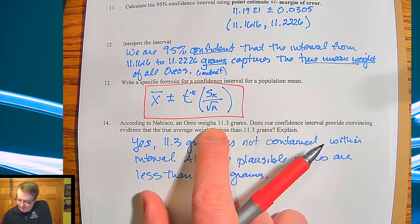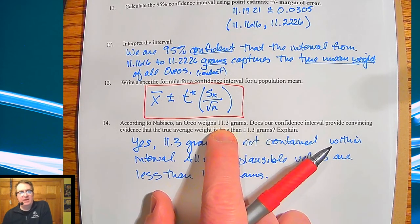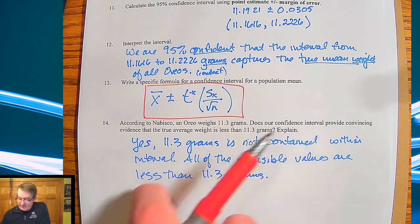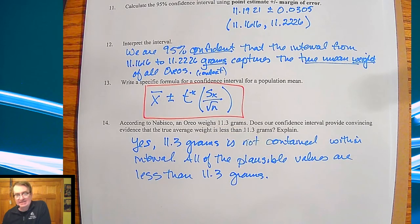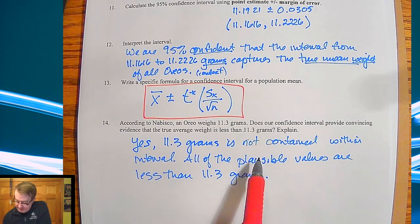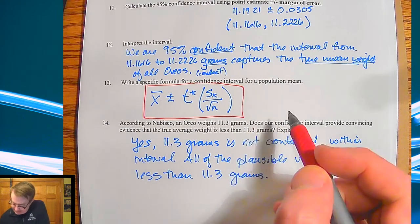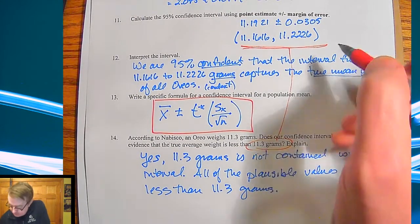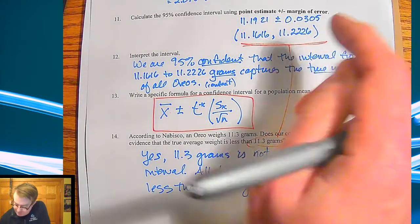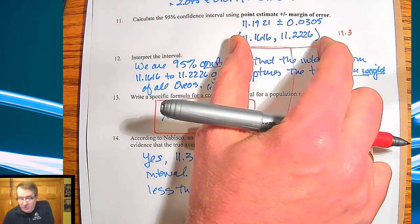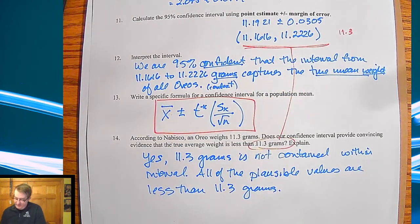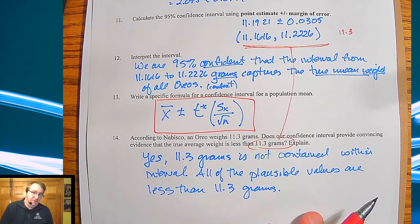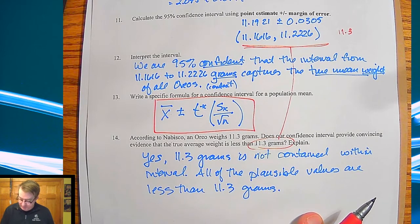So now the question becomes and this is one of those things which makes it nice for confidence intervals sometimes is that does according to NABISCO each Oreo raised 11.3 grams do I have sufficient evidence to provide or to state that the true average weight is less than 11.3 grams and if I look through this 11.3 is not in that group okay so 11.3 is up here. So since both of my numbers my 95 percent confidence range is underneath this then yeah I do have so 11.3 grams is not contained within the interval all plausible values are less than 11.3 grams. So therefore convincing evidence.